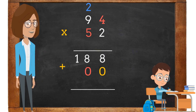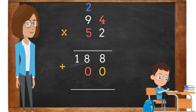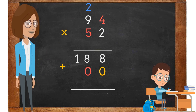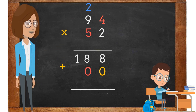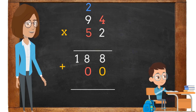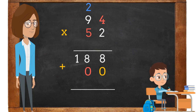The third step is to place a 0 in the ones place, because we are going to start multiplying using the 5 in the tens place. The fourth step: 5 times 4 is 20. The 0 is placed in the tens place next to the 0 in the ones place. The 2 is placed above the 9.